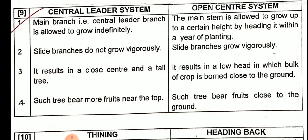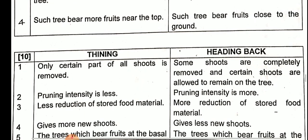In the central leader system, the tree bears more fruits near the top portion only, because the main branch is allowed to grow upward. But in the open center system, such a tree bears fruits close to the ground in all directions on all branches, instead of only the top portion.